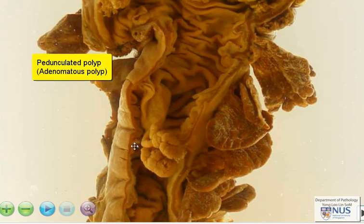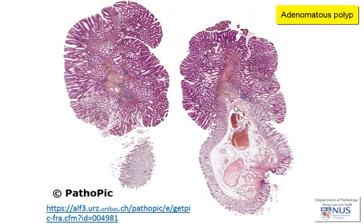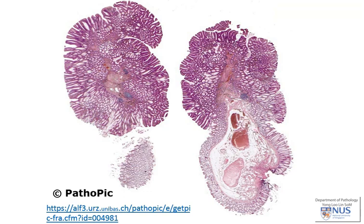Let's have a look at what the polyp looks like microscopically. This is a very low magnification microscopic appearance of a pedunculated adenomatous polyp. The polyp has been bisected and you can see two halves - in this half you can see the head of the polyp and the stalk. This area is cauterized due to endoscopic removal. The abnormal dysplastic mucosa appears darker on low power because of higher NC ratios, while the benign non-neoplastic colonic mucosa appears paler because of lower NC ratios.